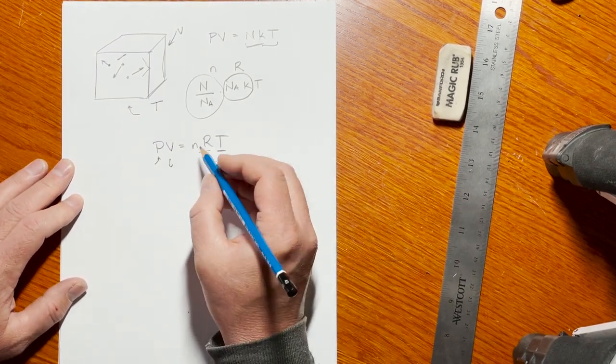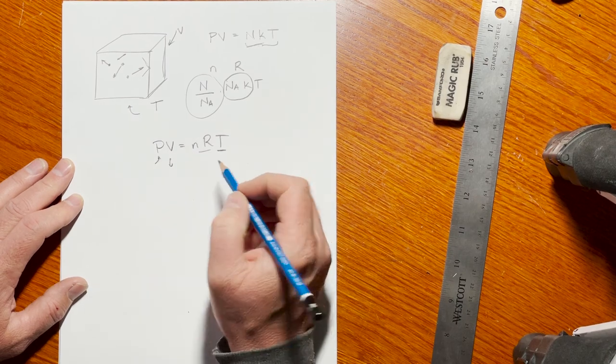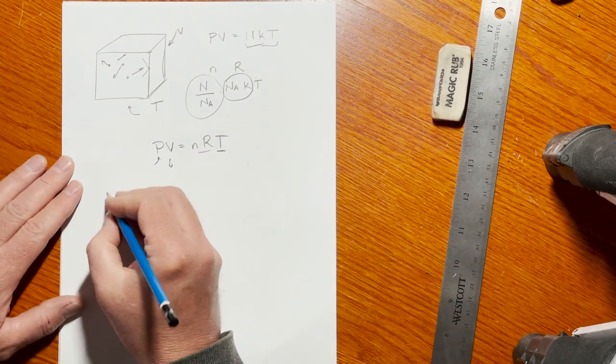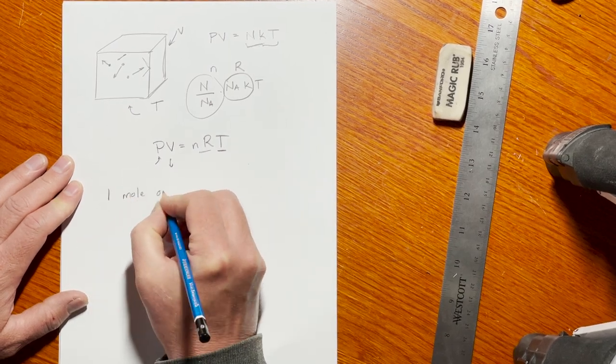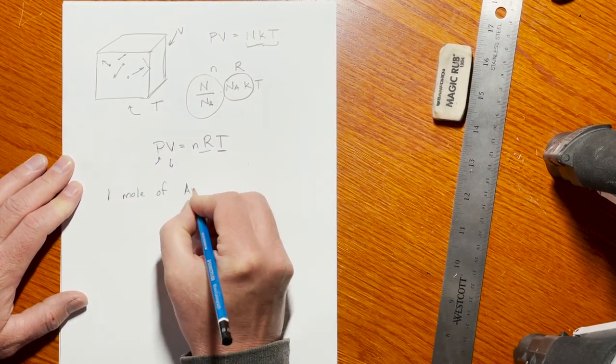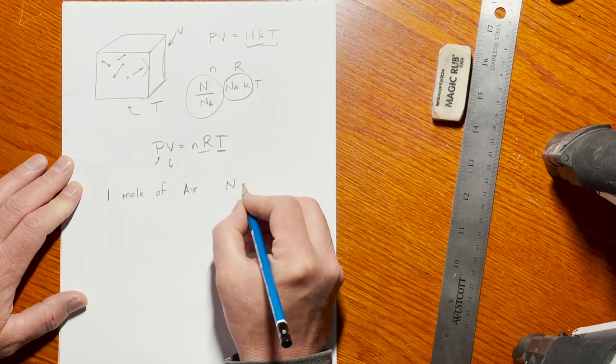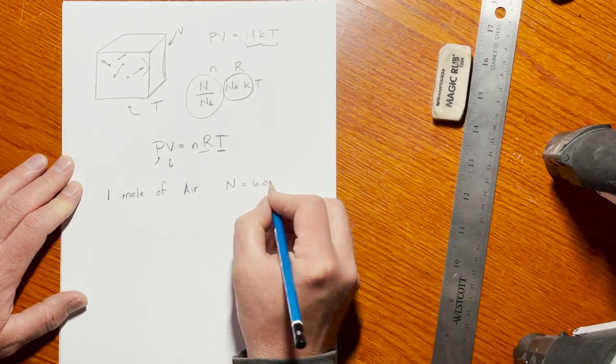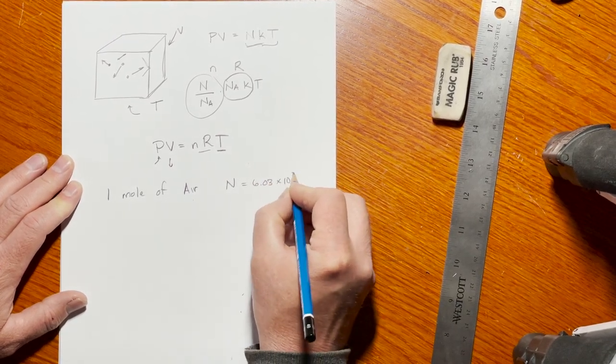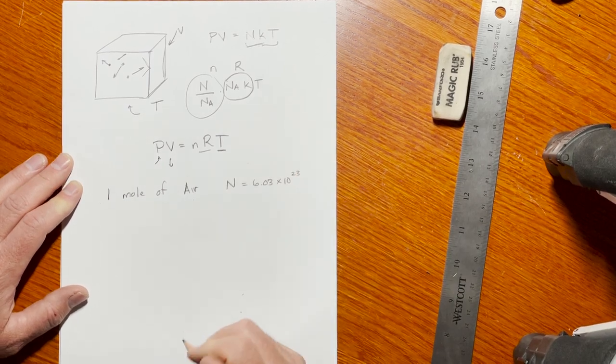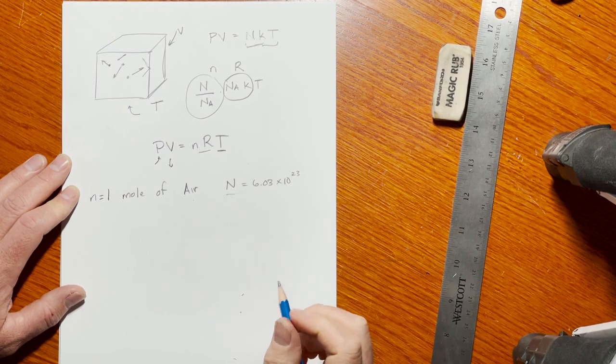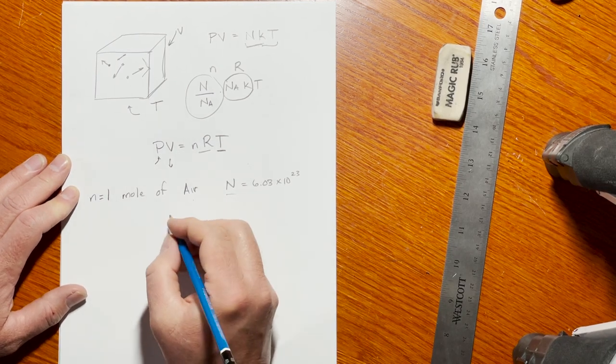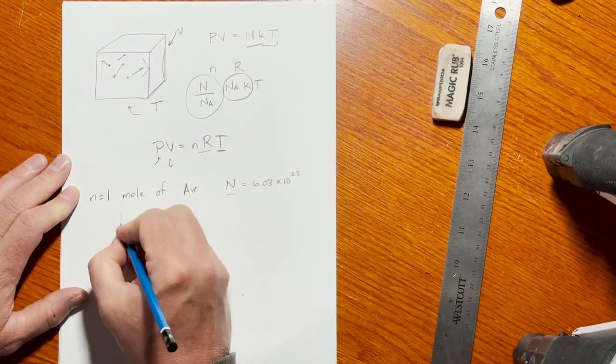For example, if I had one mole of air, which is Avogadro's number of molecules, so 6 times 10^23 molecules—this is a little n equals one or a big N equals 6 times 10^23—and I'm at room temperature, we'll just call that 300 Kelvin.